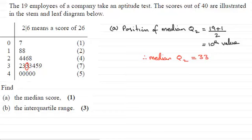Now for the next part, we've got to find the interquartile range. And to get the interquartile range, remember you've got to find the lower quartile and the upper quartile. And then the interquartile range is the upper quartile minus the lower quartile.